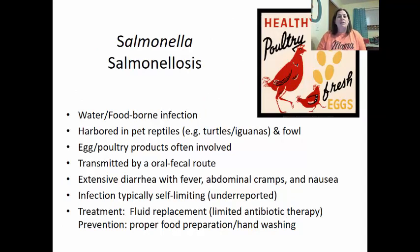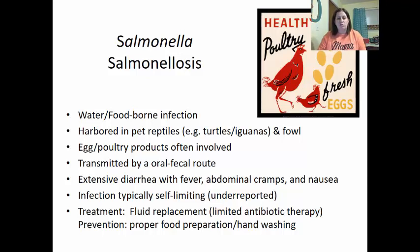Salmonella is a water or foodborne infection, harbored in pet reptiles like turtles and iguanas, as well as fowl like chickens. Egg and poultry products are often involved in transmission, through the oral-fecal route. It causes extensive diarrhea with fever, abdominal cramps, and nausea. The infection is typically self-limiting and goes underreported because people start getting better before seeking medical treatment. Treatment is fluid replacement with limited antibiotic therapy. Prevention is proper food preparation and handwashing.